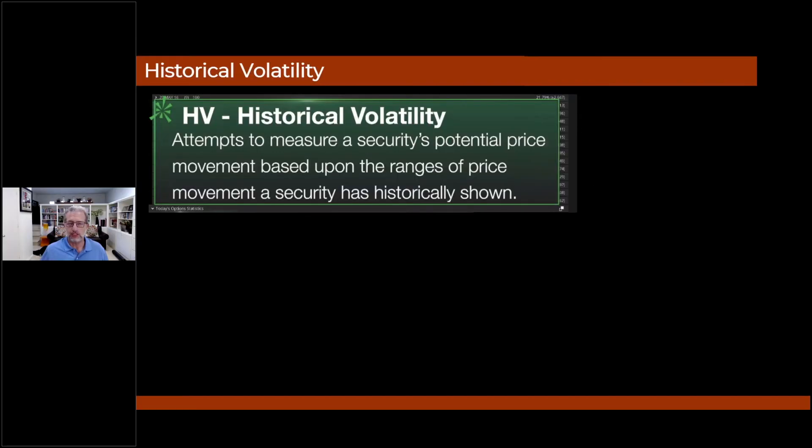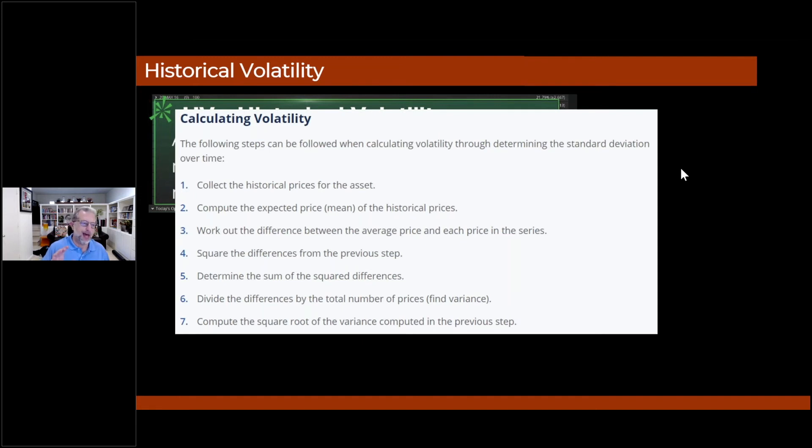All right, now let's go to historical volatility. So it's different. Let's look at the definitions real quick. Attempts to measure a security's potential price movement based upon the ranges of price movement a security has historically shown. Now here, this is going to be pure math. There's no sentiment in this whatsoever. This is pure math. Now, what I'm not going to do is go down each one of these line items. This is how you compute historical volatility. But to me, that's a bunch of gibberish.